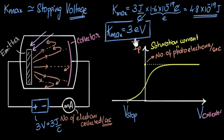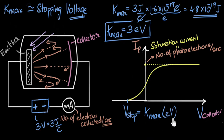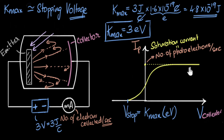To convert to joules, just multiply by 1.6 × 10⁻¹⁹. So putting it all together: if you want to count how many electrons are emitted per second, that is indicated by the saturation current. If you want to find the maximum kinetic energy with which these electrons come out, that is indicated by the stopping voltage. Now we can change the intensity or frequency of light and observe what happens to the saturation current and stopping voltage, telling us what's happening to the number of electrons and their maximum kinetic energies.